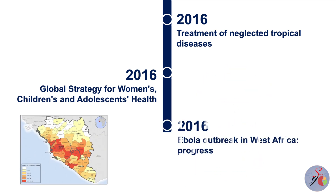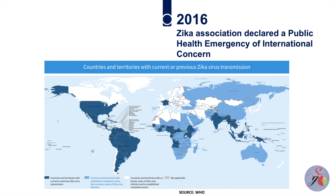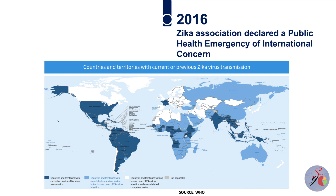In the same year, WHO announced zero cases of Ebola in West Africa but warned that flare-ups of the disease were likely to continue, and that countries in the region needed to remain vigilant and prepared. In 2016, WHO declared that the recent association of Zika infection with clusters of microcephaly and other neurological disorders constitutes a public health emergency of international concern.